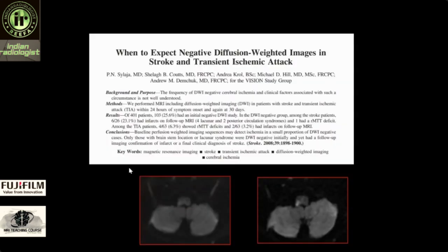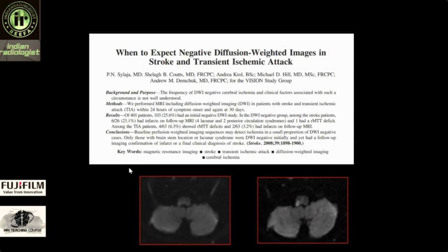When should we expect negative diffusion weighted images in stroke and TIAs? There are some infarcts which diffusion misses — possibly because of the time period, the location, a lower B value, infarcts in the posterior fossa or posterior circulation, or small lacunar infarcts. Diffusion is reliable and should be the first sequence in any MRI protocol. There are centers that have combined CT with diffusion, calling it a CT-and-diffusion screening MRI for stroke.